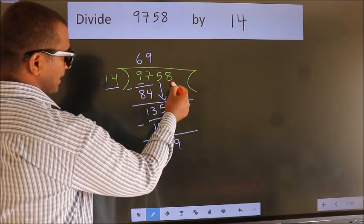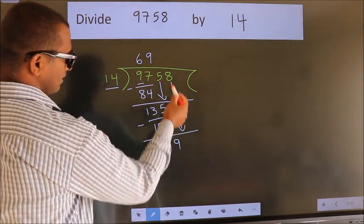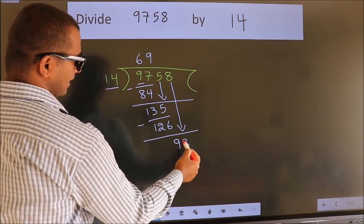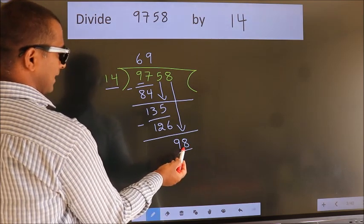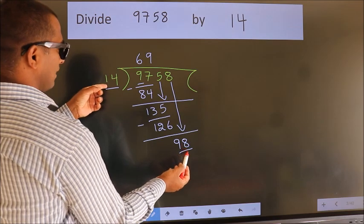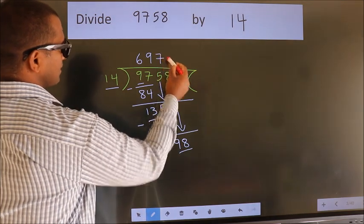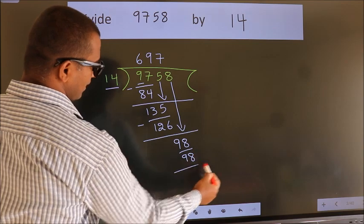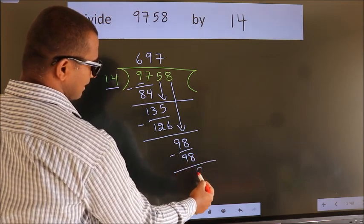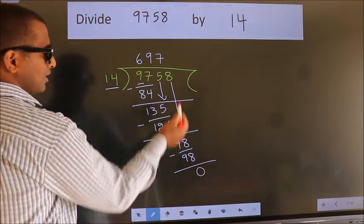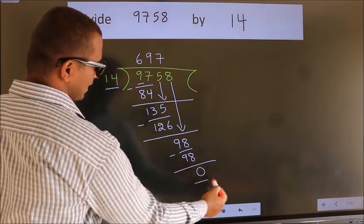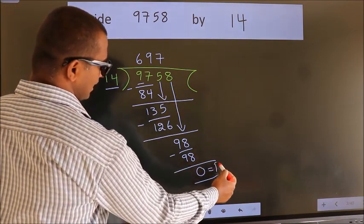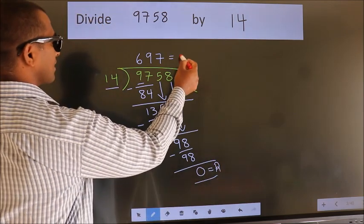After this, bring down the next number. So 8 down. So 98. When do we get 98 in the 14 table? 14 times 7 equals 98. Now we subtract. We get 0. No more numbers to bring down. So we stop here. This is our remainder. This is our quotient.